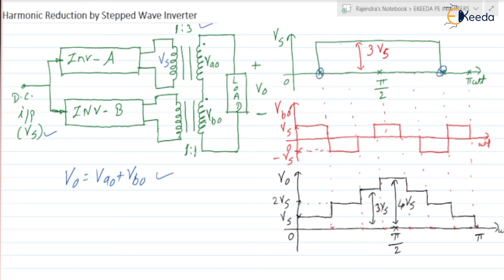VB0 is the output voltage of inverter B — since it uses a 1-to-1 transformer, it equals VB0 directly. And we can write VA0 by 3 because the first transformer has a 1-to-3 turns ratio, so the secondary voltage is VA0 divided by 3.